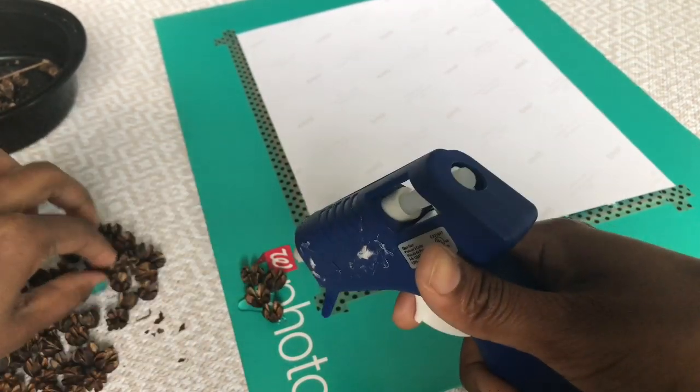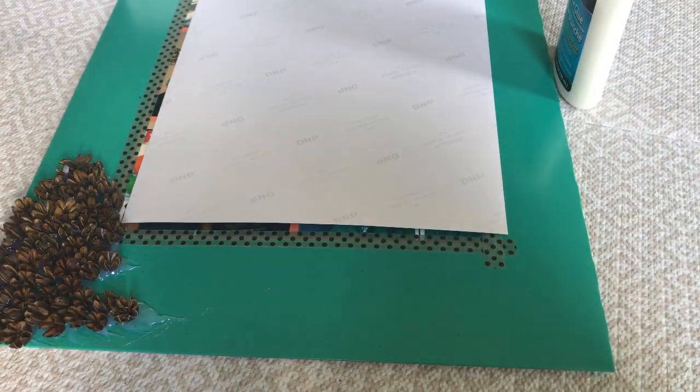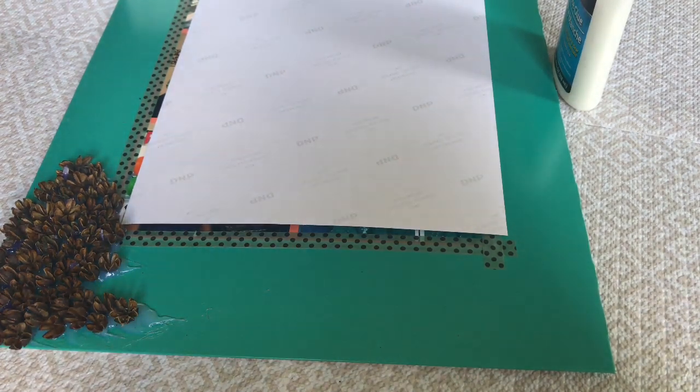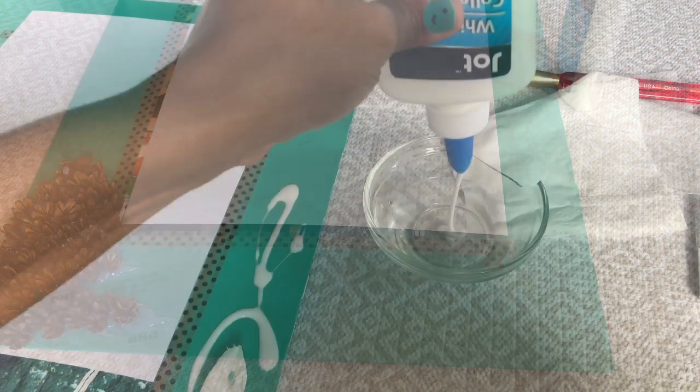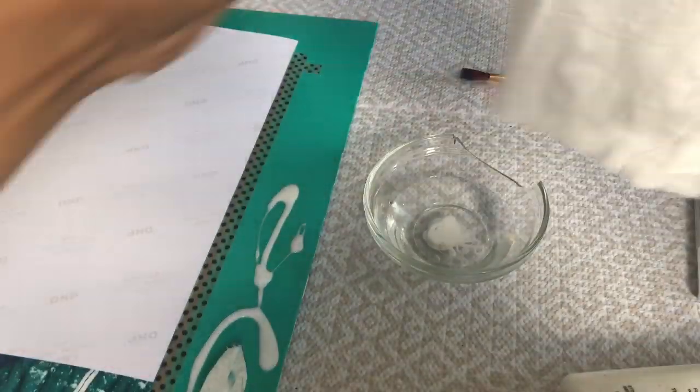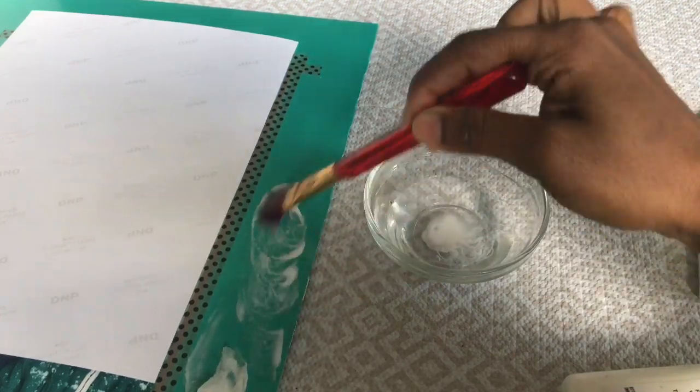You can just avoid this step and start pasting the snow style photo frame for all four sides. For the snow style, I'm just using white glue and I'm just mixing it with a little water.